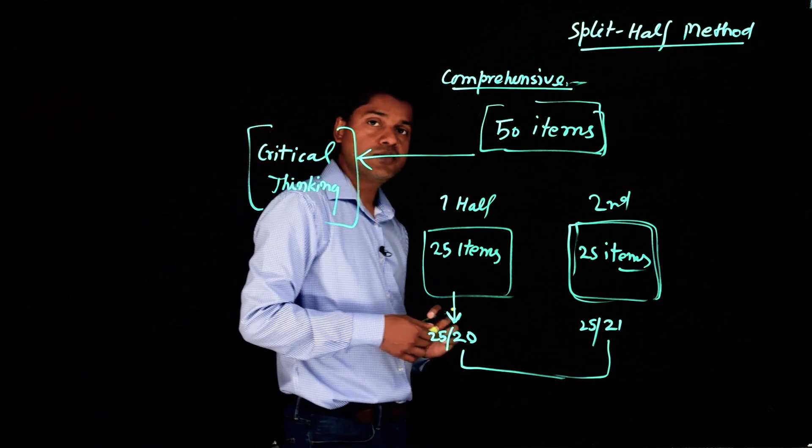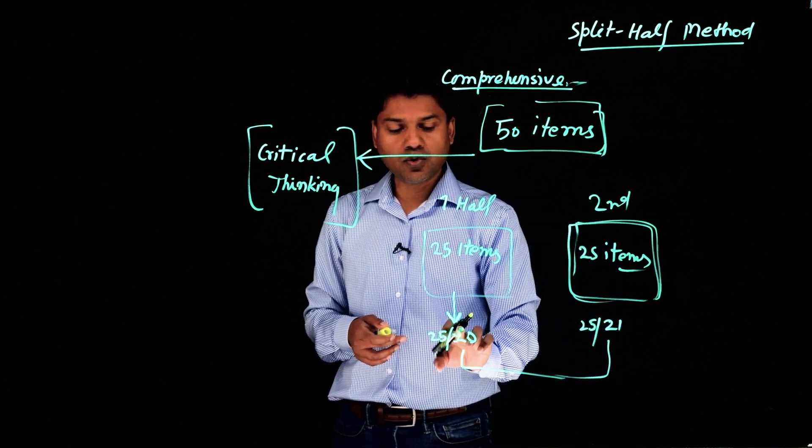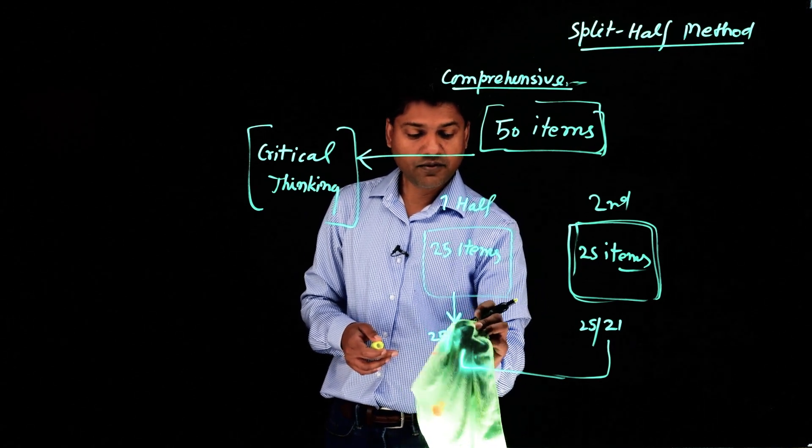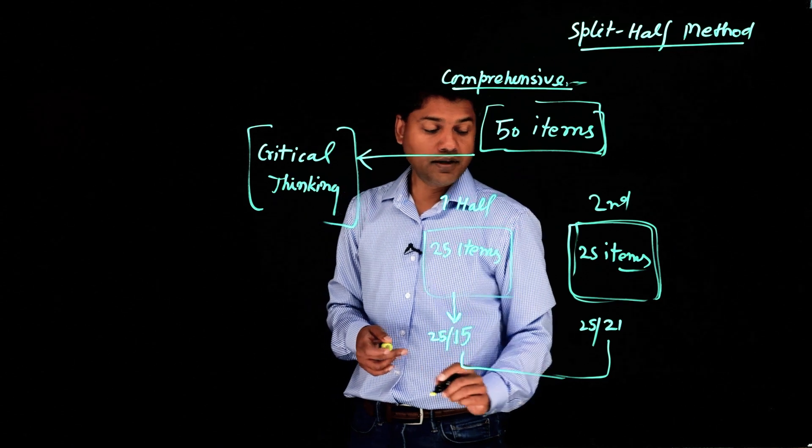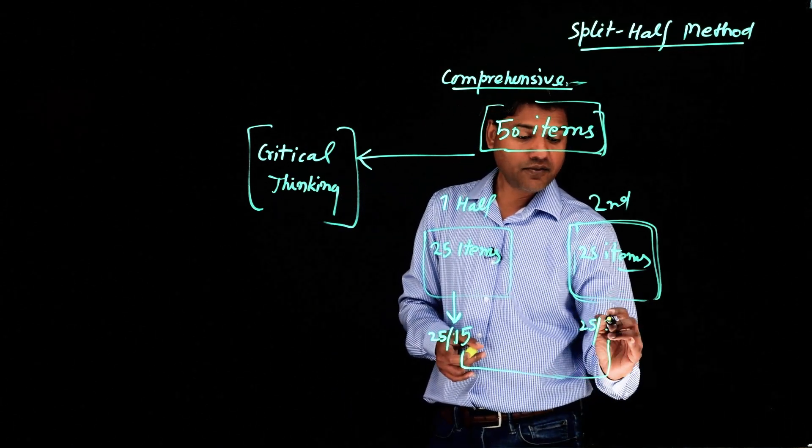If the test scores are very different, let's say on the first half of the same test, this person scored 15 on the scale of critical ability. And on the second half, this person scored 25 out of 25.